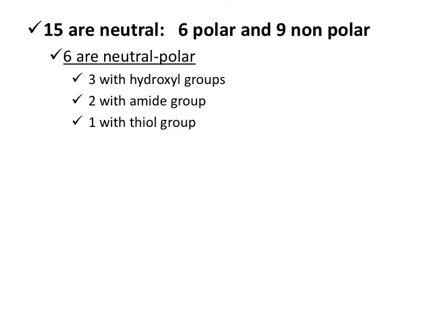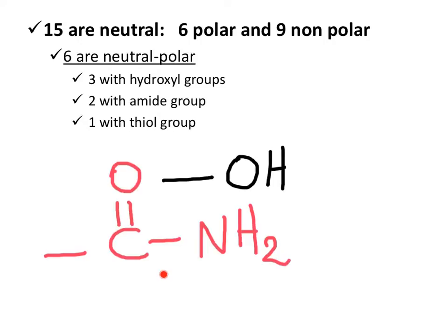Among the 15 neutral amino acids, six are polar and nine are non-polar. The polar ones will contain a hydroxyl group — those are serine, threonine, and tyrosine. The side chain of asparagine and glutamine contains an amide group. The last polar amino acid is cysteine, which has a thiol group.